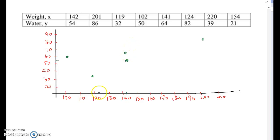And 124, 82 is here, 220, so here's one more. So 220, I'm going to put 220 here. So 220 and 39, so 39 here and 154 and 21, so here. So that's the scatter plot of this data.